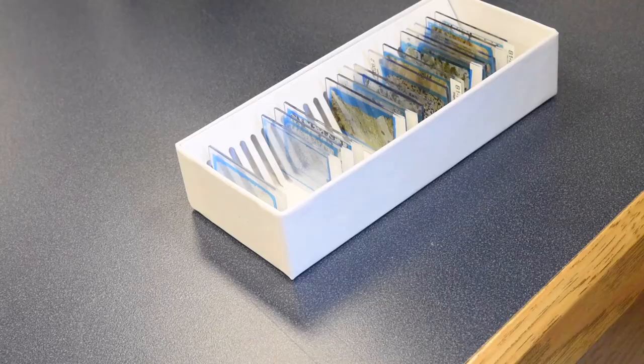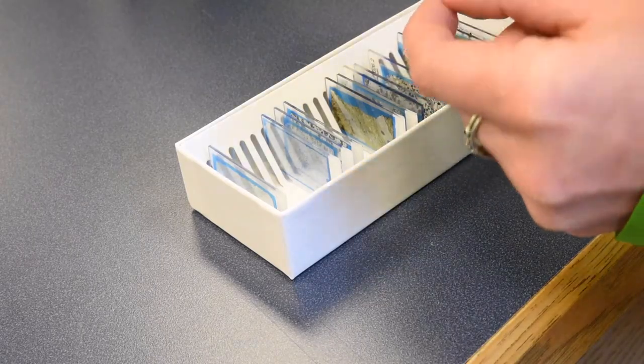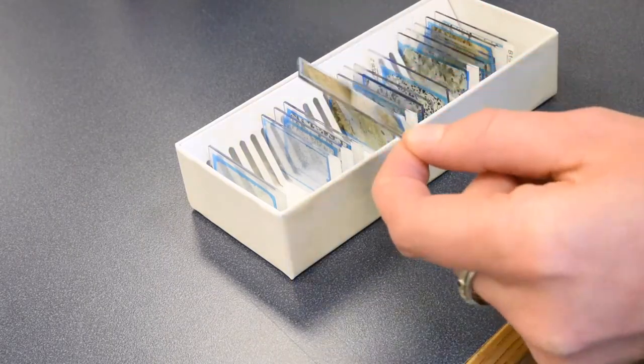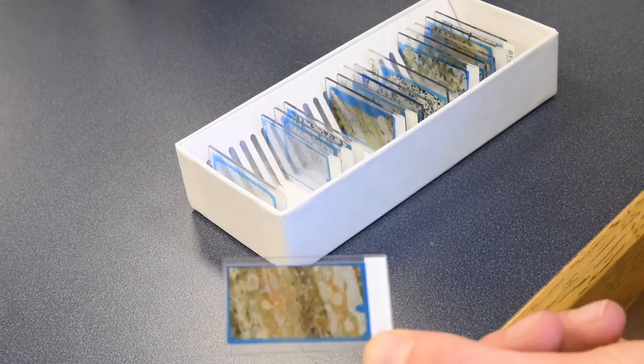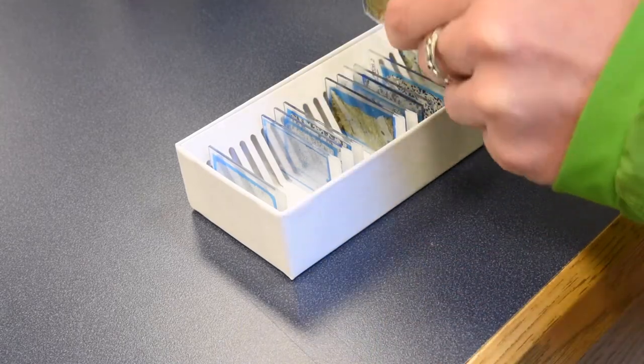In order to look at our samples under the microscope, we first have to make what's called a thin section, which is a really thin slice of a rock mounted to a glass microscope slide.